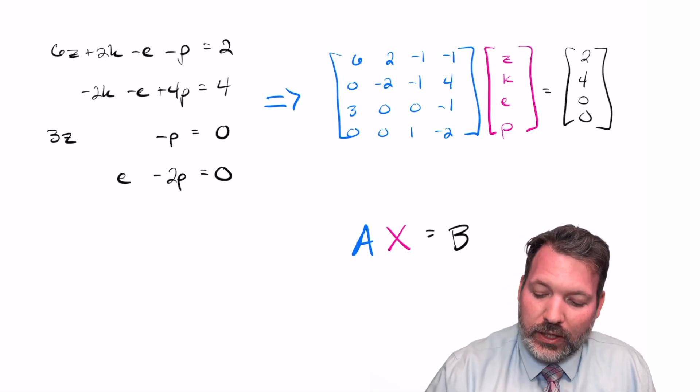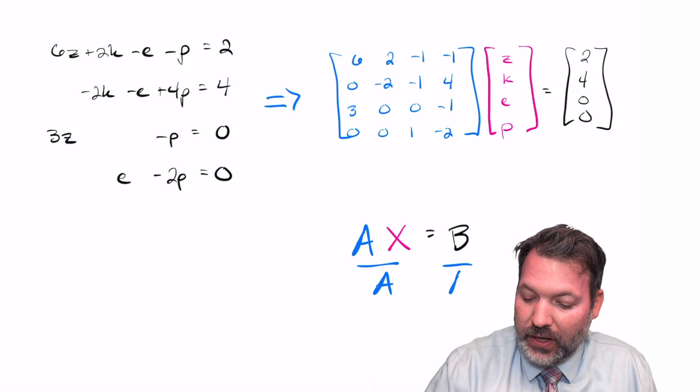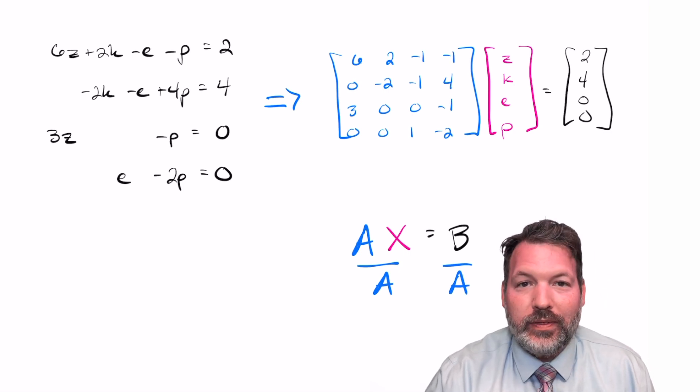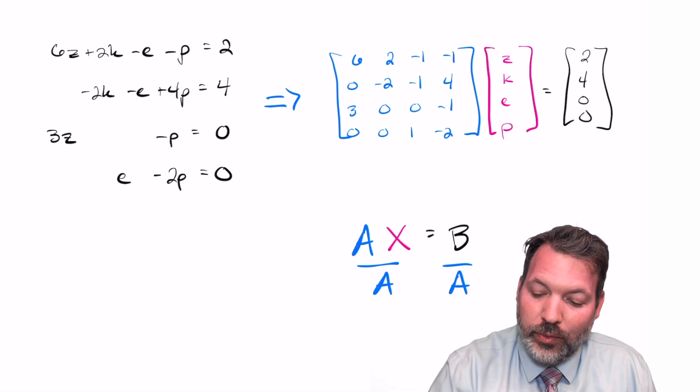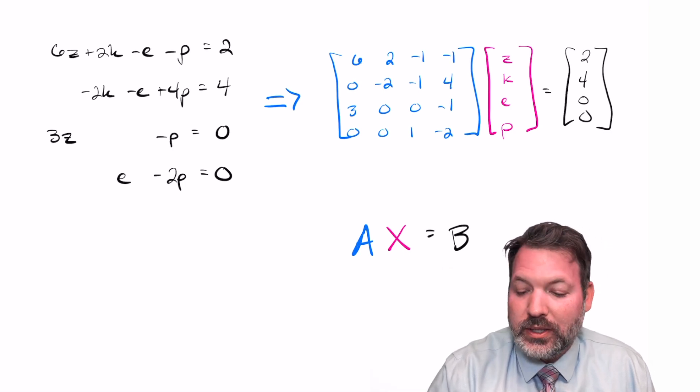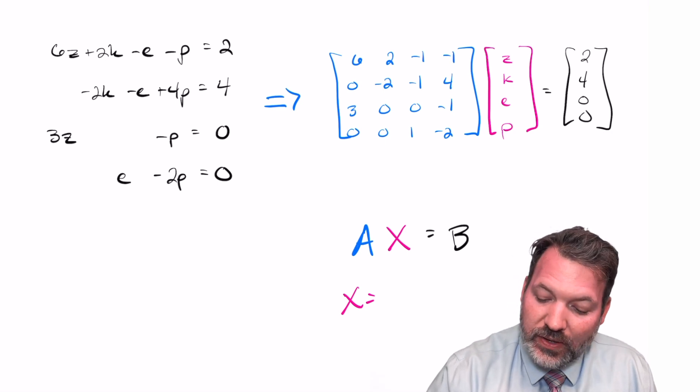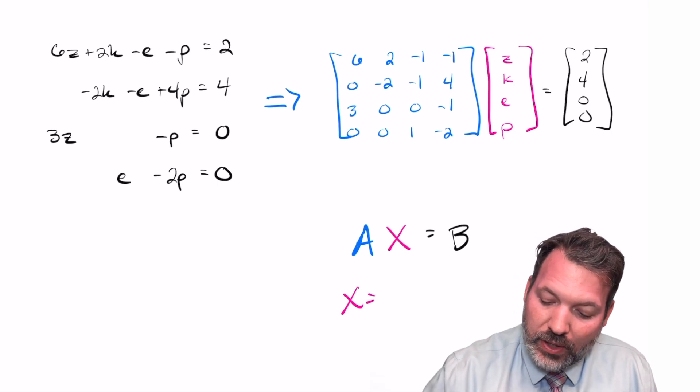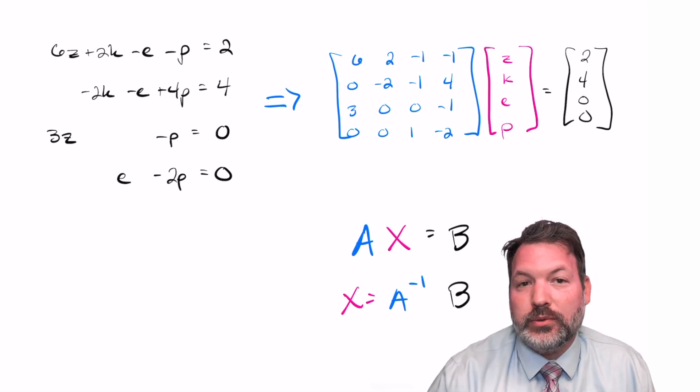This almost looks like a traditional equation where we might go ahead and solve for X by dividing both sides by A. But being that these objects are not numbers or variables in the traditional sense, we want to be a little bit careful. There is a way to solve this directly, but we have to use something called inverses. Specifically, in this case, X is going to be equal to the inverse of that matrix A times the matrix B.